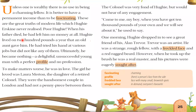Now let's read the story line by line. The first line says: 'Unless one is wealthy, there is no use in being a charming person.' This means if you are smart but not wealthy, that is not good — you should be rich.